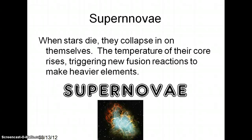Supernova explosions are what we talk about when stars die. The temperature gets so hot in the core because the pressure increases so much that you get new fusion reactions. These new fusion reactions are responsible for every element on the periodic table that is not man-made and comes after iron — so a lot of the other elements. This also explains why those elements are less abundant than helium and carbon.